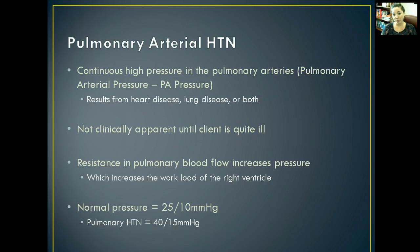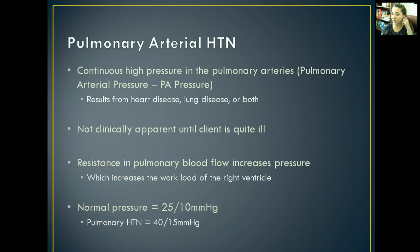Pulmonary arterial hypertension increases your pulmonary arterial pressure, or PA pressure. It results from heart disease, lung disease, or both. It's not usually clinically apparent, meaning you won't see signs and symptoms until the patient is very ill. A lot of times they're going to have resistance in their pulmonary blood flow that increases pressure, which then increases the workload in the right ventricle.